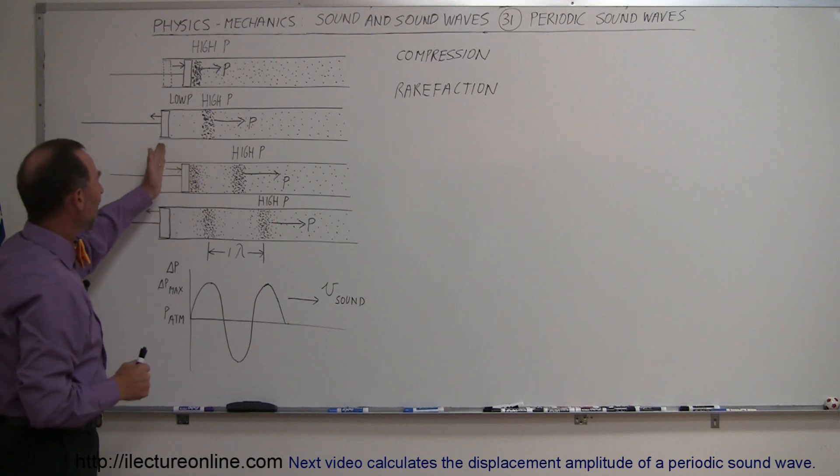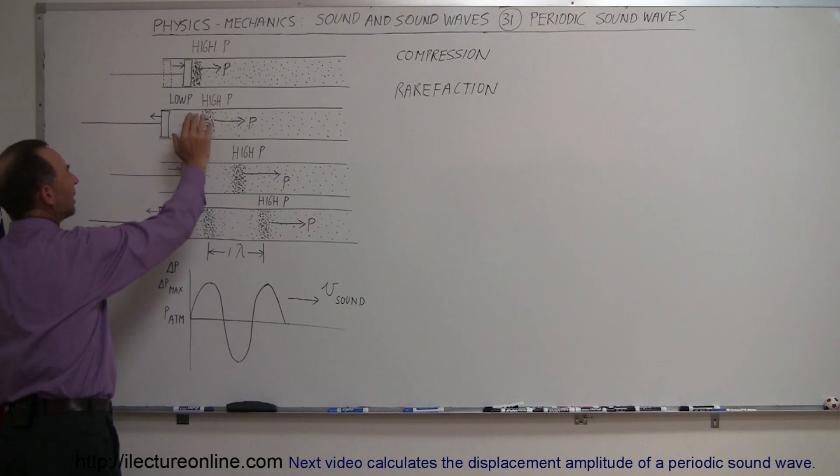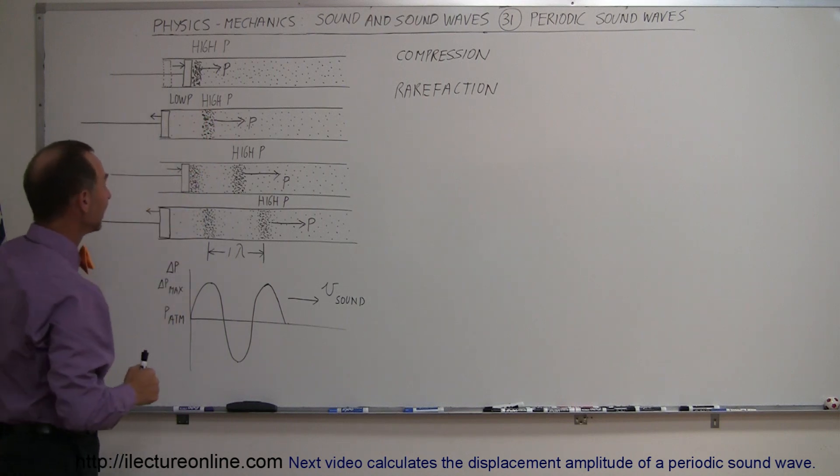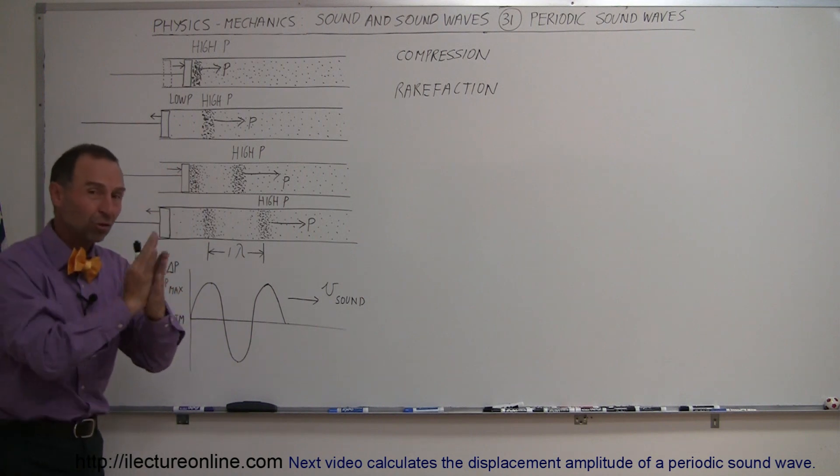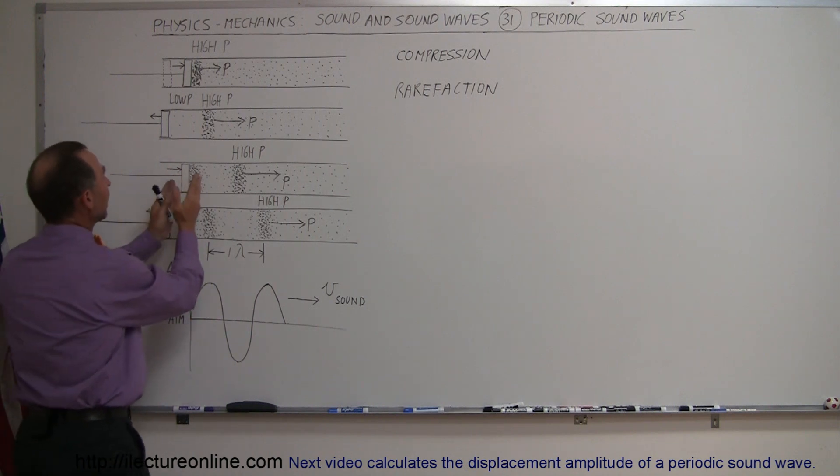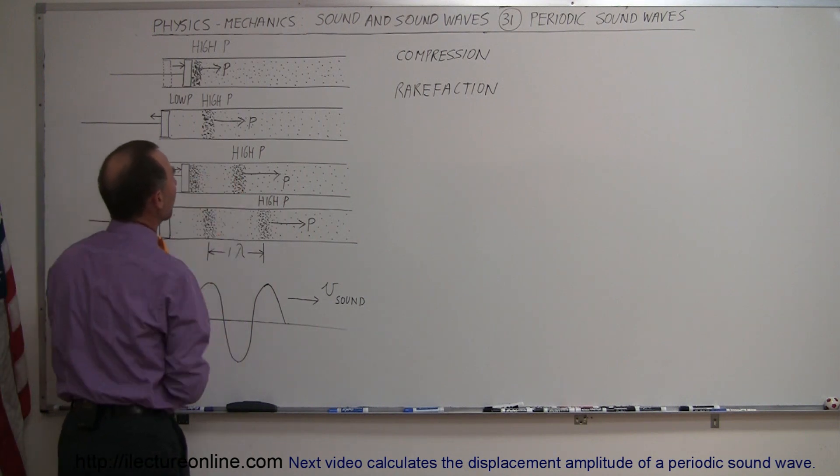When the piston goes back to the left, this is an evacuated region. The molecules rush right back in there, but there's a delay, so there's a low pressure region. Then when the piston comes back again, it pushes those molecules together, and that compression region starts moving to the right.